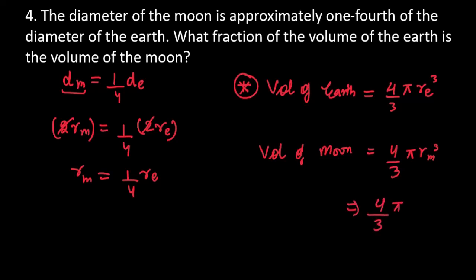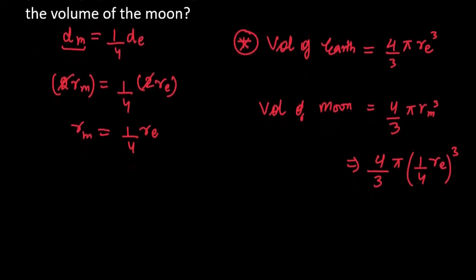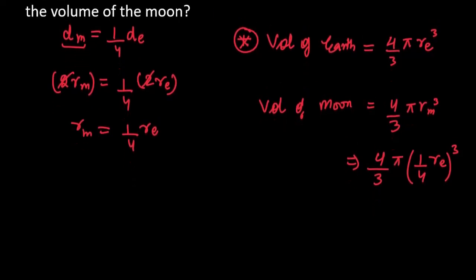We will substitute so that our values can cancel. RM's value is 1 by 4 RE cube. Now we have to find the fraction, find the ratio. So let's find the ratio. Volume of earth over volume of moon, so we divide both. We need to find the fraction because we need the ratio.